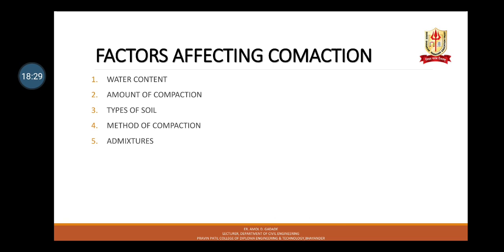Moving further to various factors which affect compaction and hence dry density of soil. The first one is water content. Water content is an important parameter in compaction. It is clear from laboratory experiments that as the water content is increased, the compacted density goes on increasing till maximum dry density is achieved. After further addition of water, density decreases. The second factor is amount of compaction — increasing the compaction effort results in an increase in maximum dry density and a decrease in optimum moisture content.